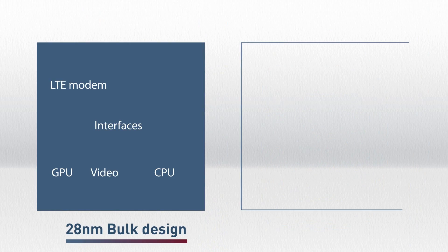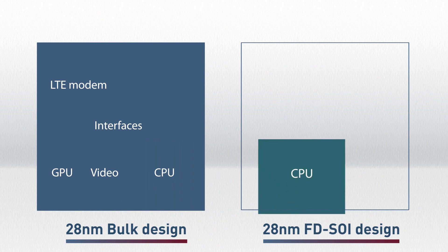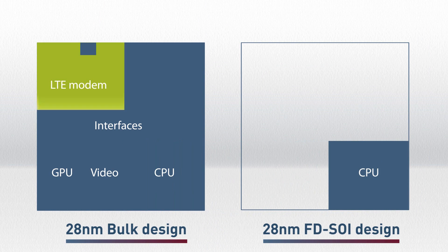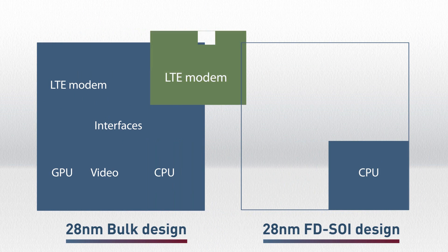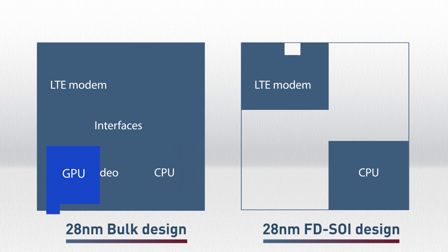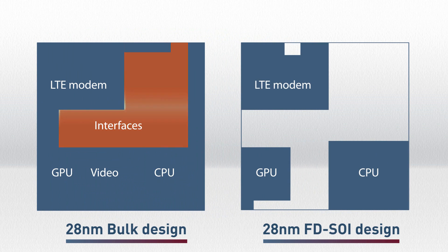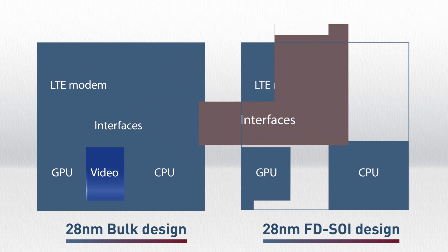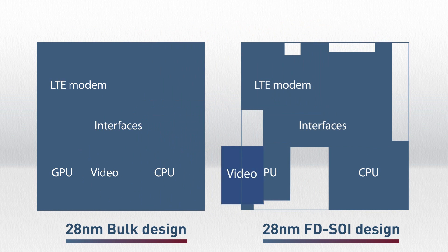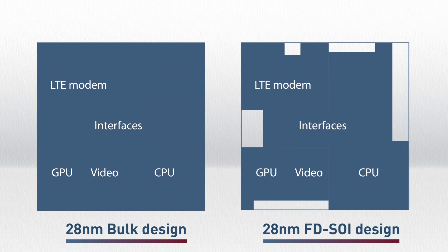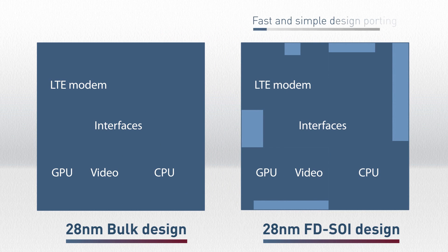When designing a chip in FDSOI, most of the IP blocks can be directly reused from a bulk design. Only a few analog parts need to be adapted to FDSOI, making the porting of an existing design to FDSOI extremely simple and fast.